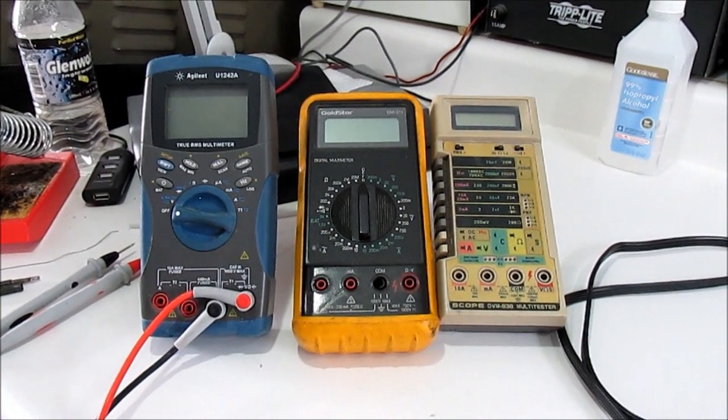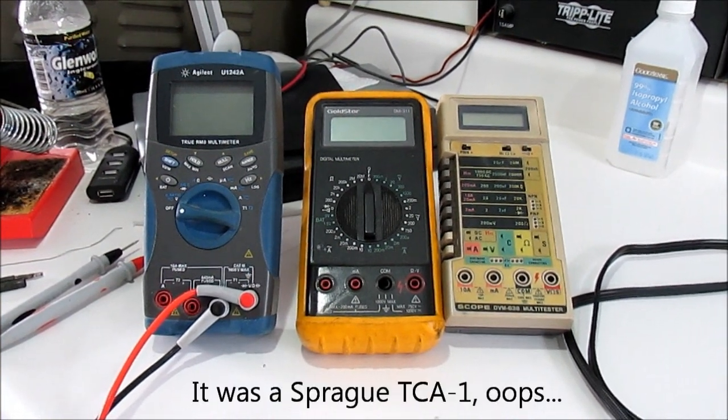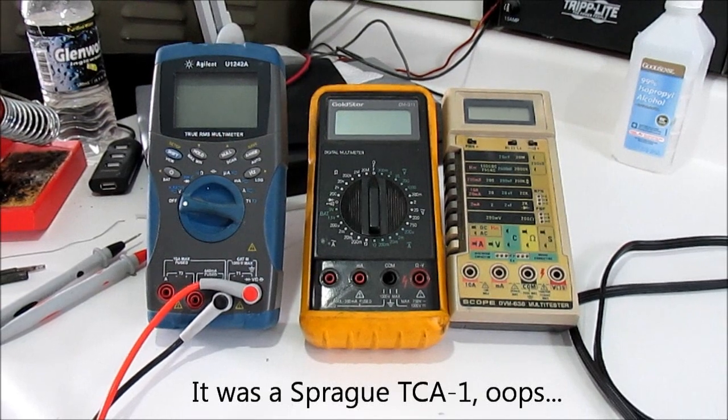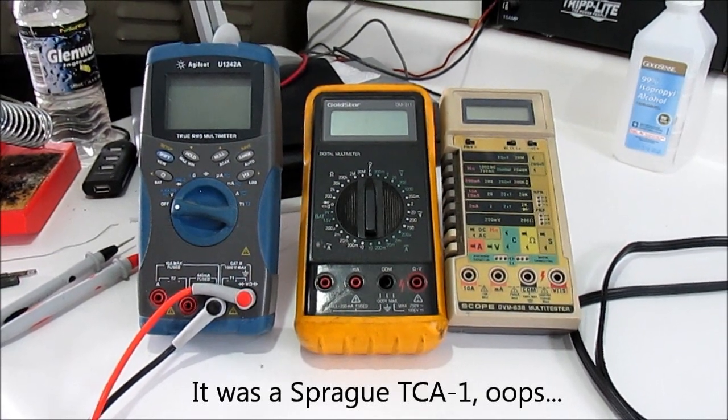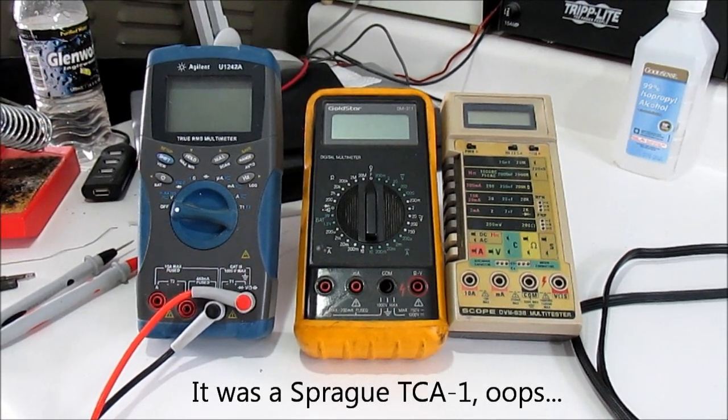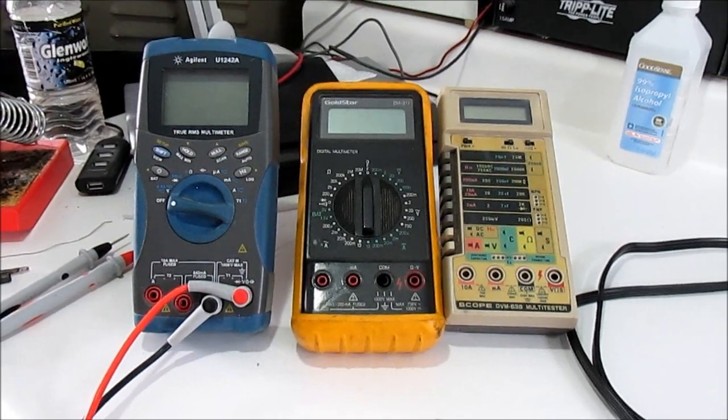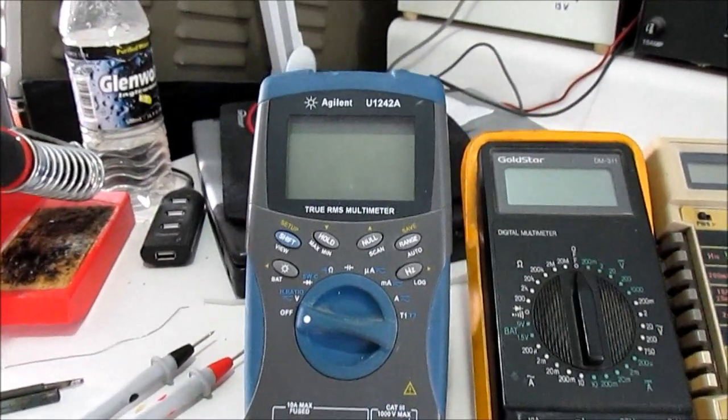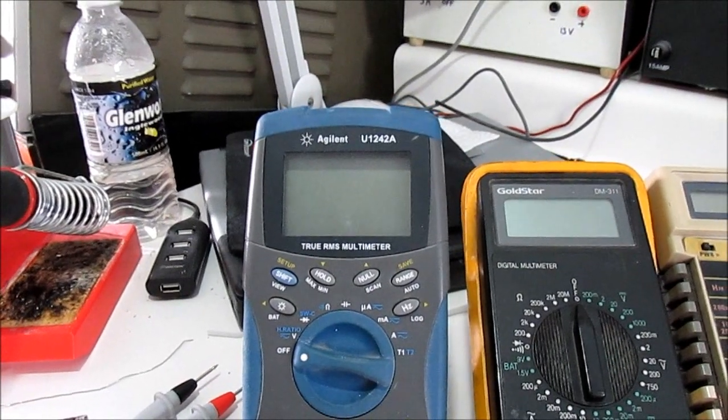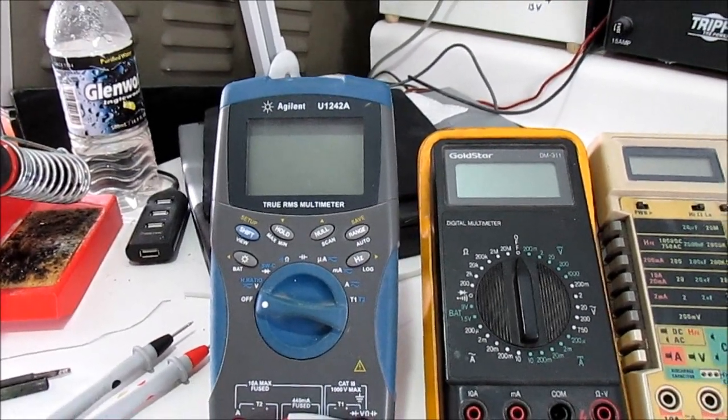In an earlier video, I was working on that Sendcore capacitor tester and I was checking the ripple voltage on the rectifier and filter caps. My Agilent U1242 here was kind of freaking out when I changed it to AC.